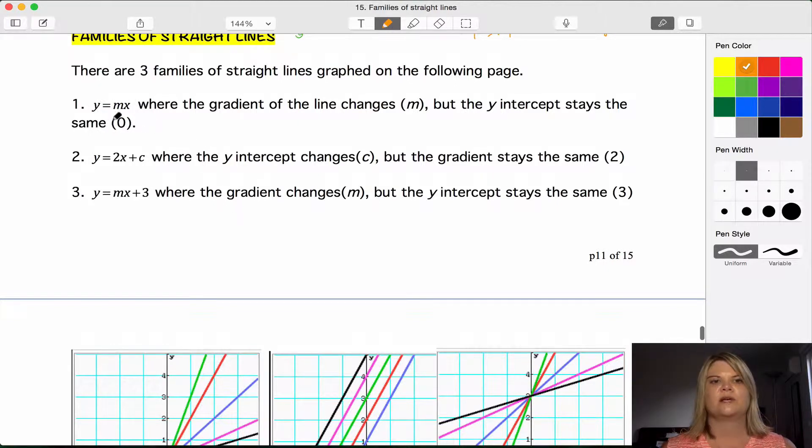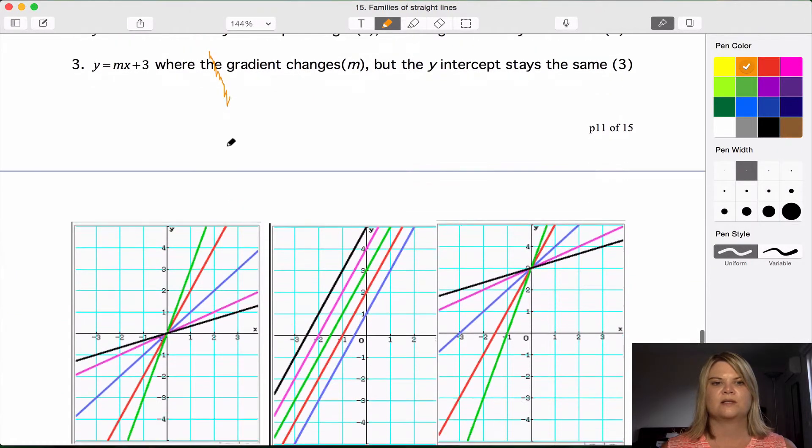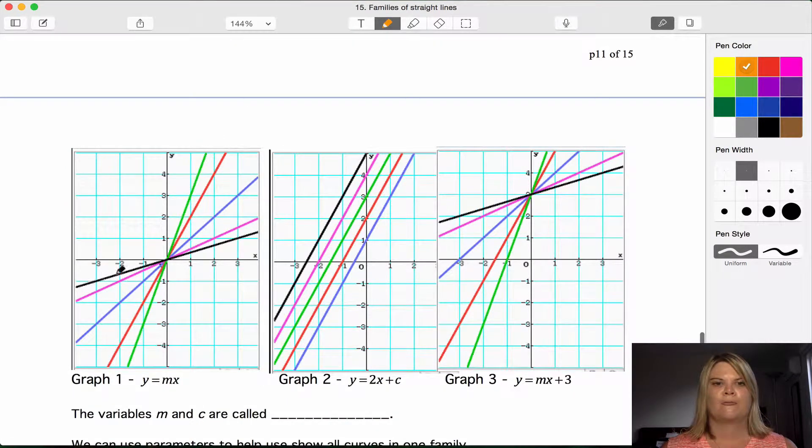You would get graphs like y equals 2x. This is y equals a half x, y equals 1x, y equals 2x, y equals 3x. And the family could keep on going, y equals 4x, y equals 5x, things like that. So that's the family of graphs y equals mx.